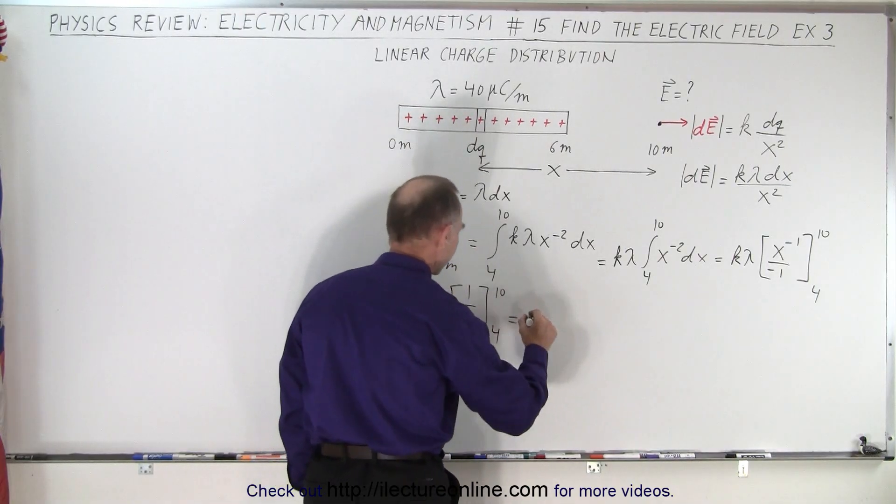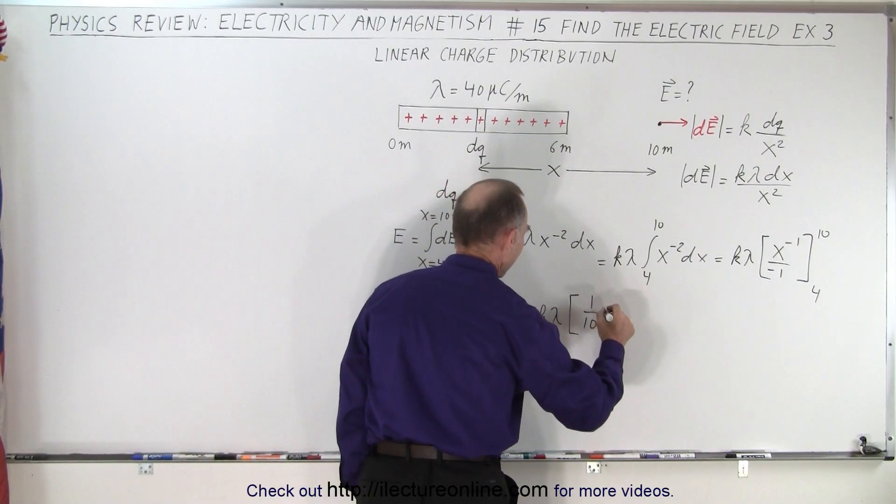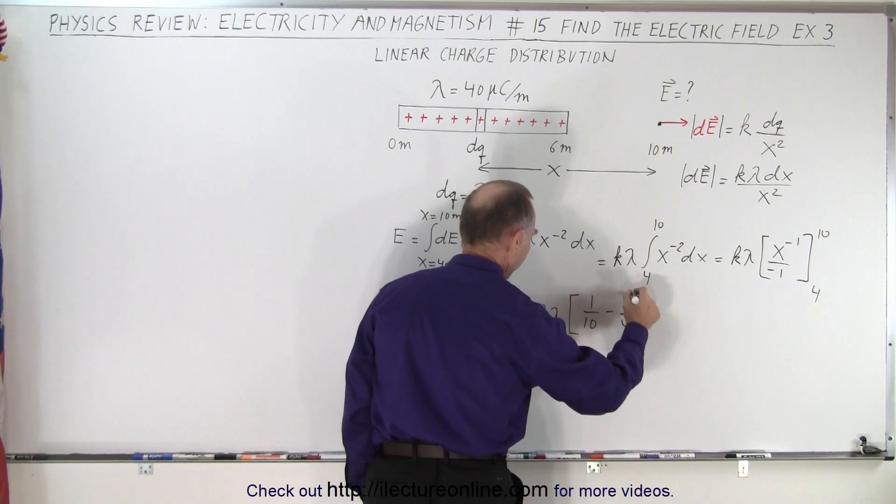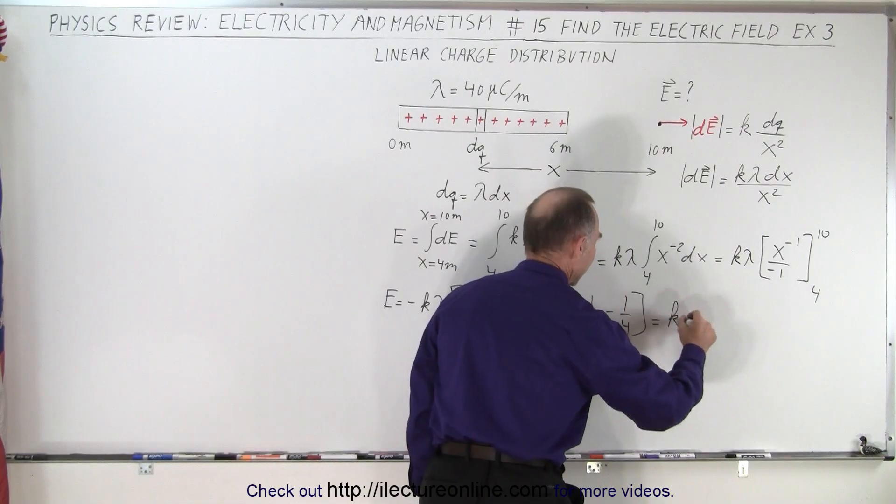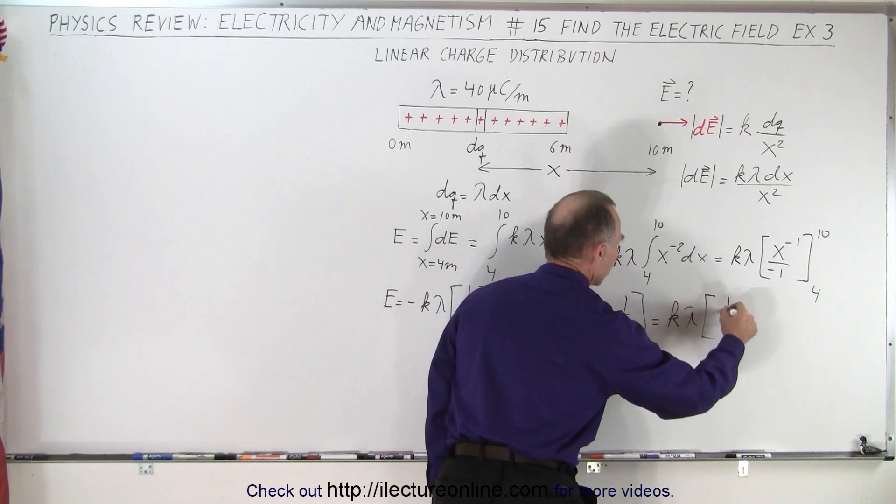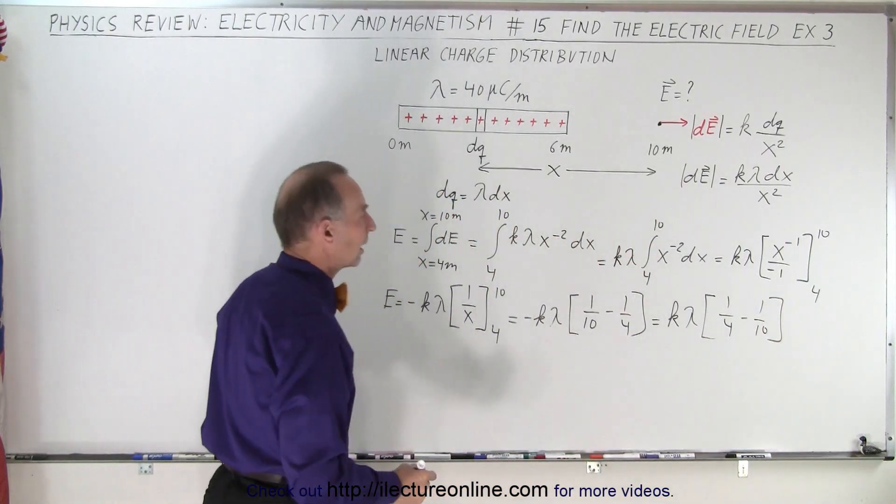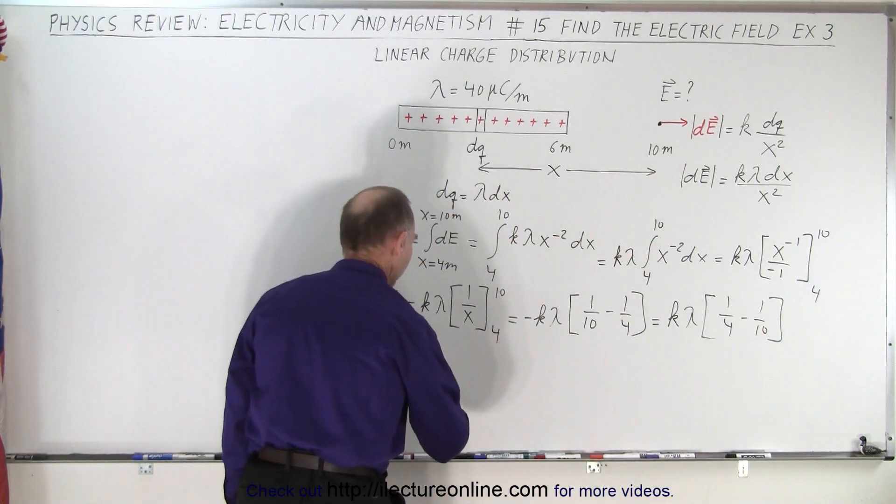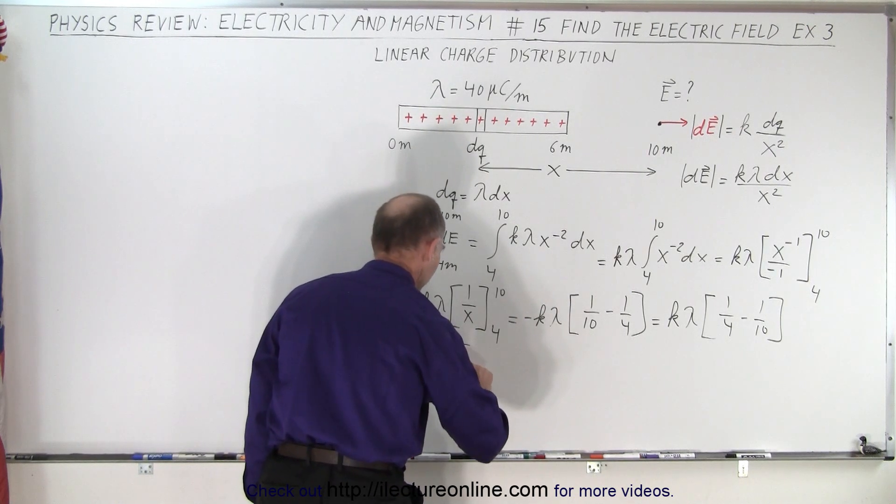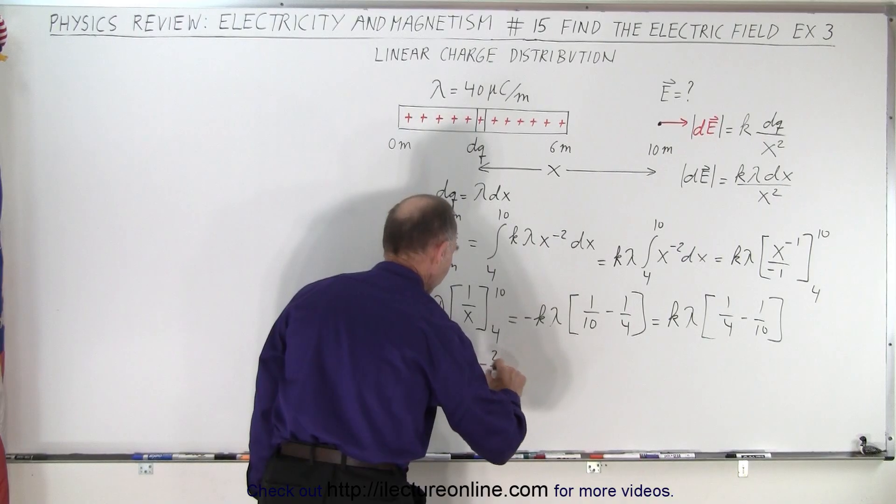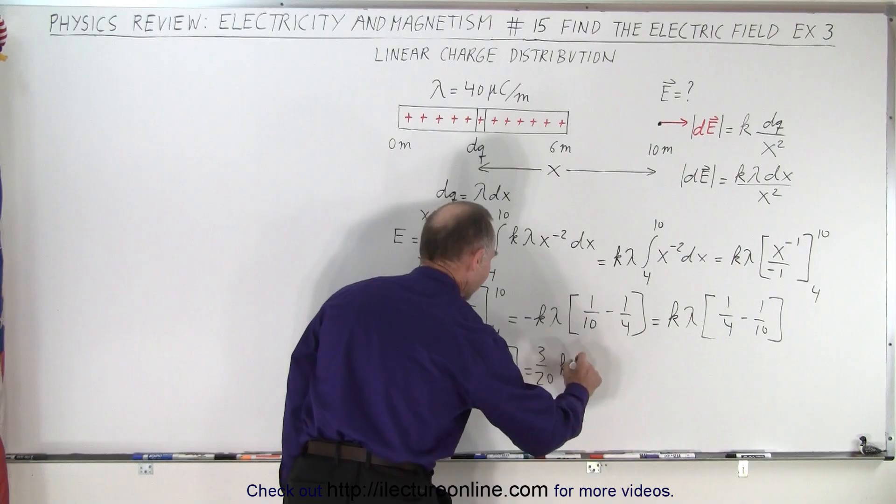So we plug in the upper limit, so we get minus k lambda times 1 over 10 minus 1 over 4. And then if we distribute the negative sign, that means that this is a positive k times lambda times 1 over 4 minus 1 over 10. Common denominator is 20, so this becomes equal to k times lambda times 5 over 20 minus 2 over 20, which means that this is equal to 3 twentieths of k times lambda.